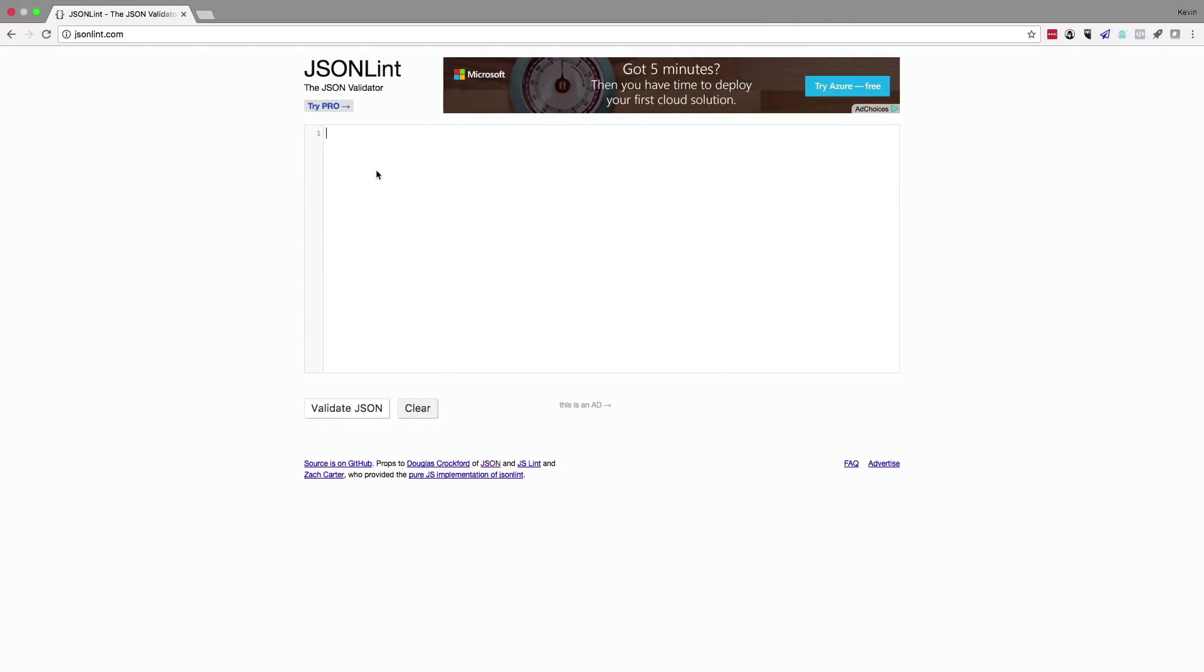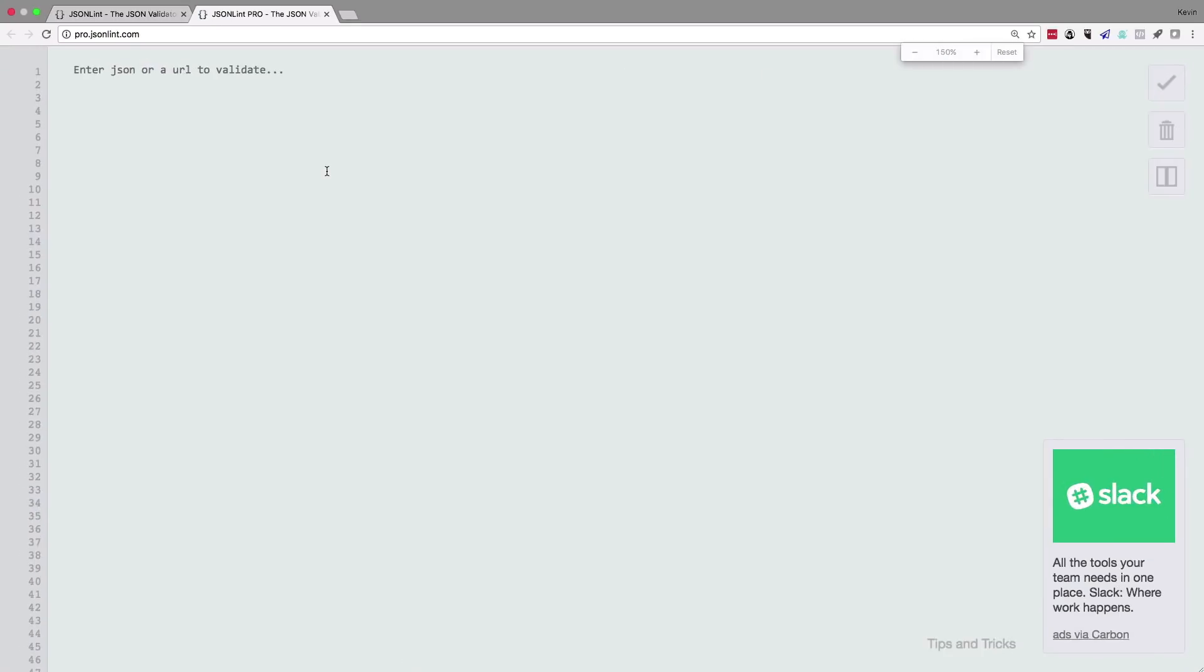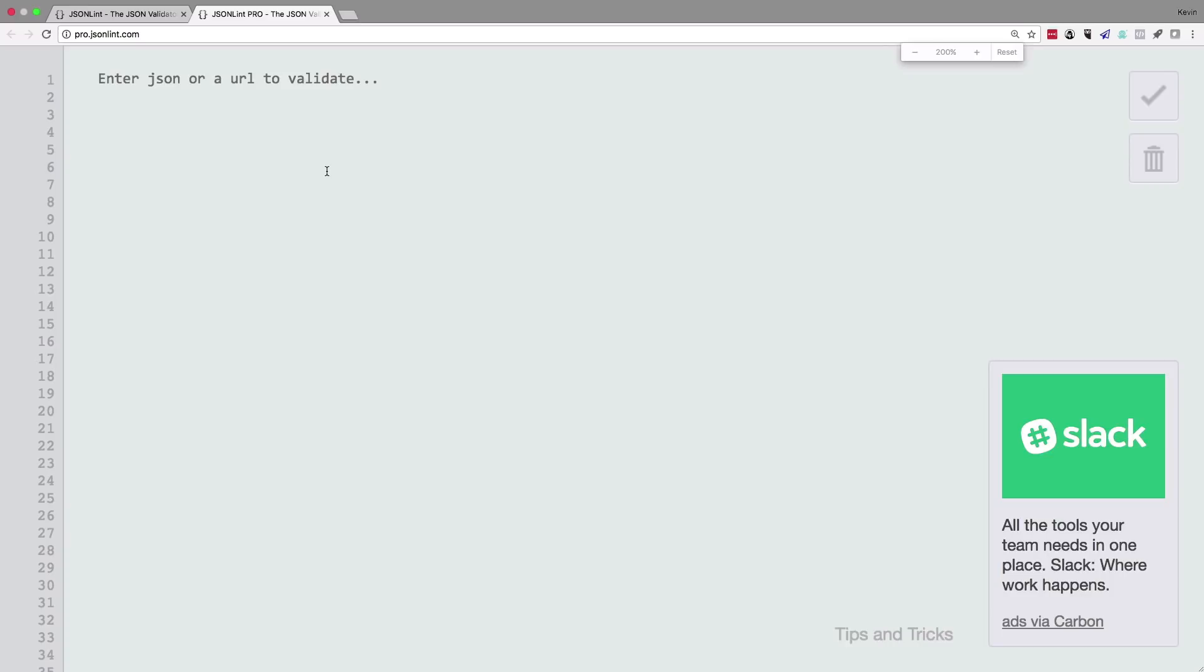We could type in or paste our JSON-encoded data here. I want to click on Try Pro—I like this interface better. Let me zoom in so we can see it. Let's enter that first object I was showing you earlier.